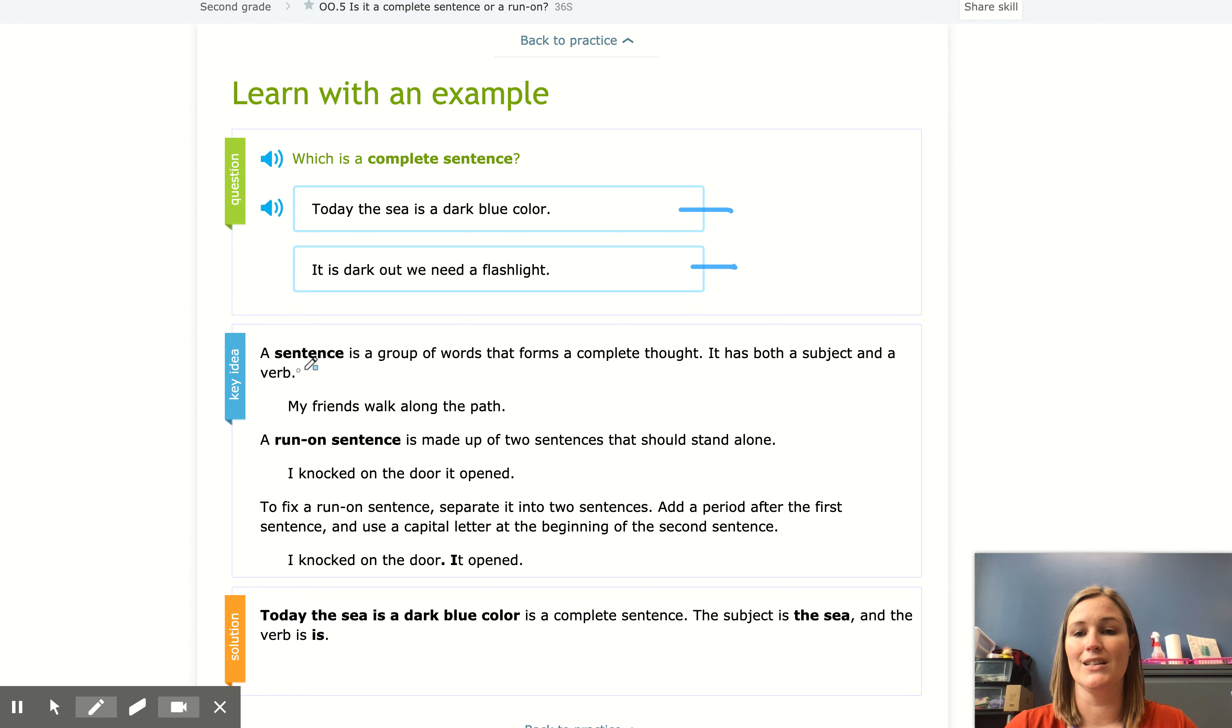Our key idea here is a sentence is a group of words that forms a complete thought. It has a subject and it has a verb. So my friends walk along the path. My subject there is my friends and my verb is walk along the path. Walk is actually our verb but the end is our predicate so it's our end of our thought. So this sentence right here is a complete sentence.